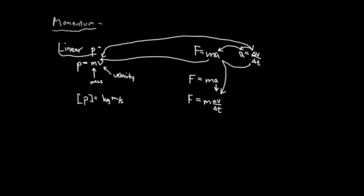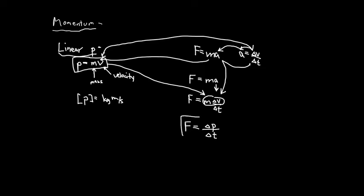Mass times change in velocity is the definition of momentum. So this gives a new equation where F equals change in P — which comes from mass times velocity — all divided by change in time. Force is equal to a change in momentum over a change in time. I can reshuffle Newton's laws and solve for delta P by multiplying both sides by delta t, which moves delta t to the other side, giving F times change in t equals change in P.